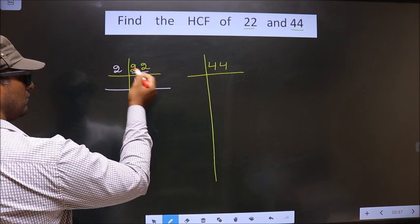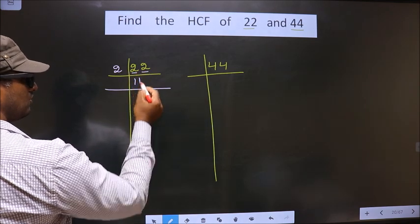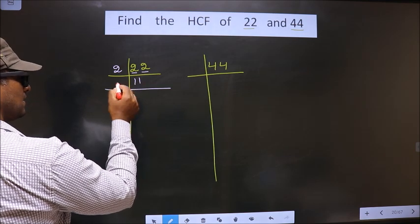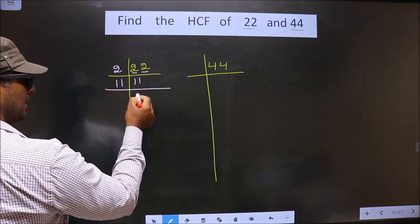Next number is 2. When do we get 2 in the 2 table? 2 times 1 is 2. Now we got 11. 11 is a prime number, so we take 11 and 1.